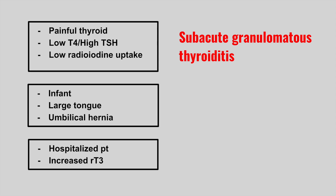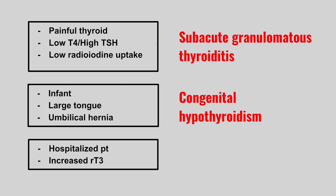The next patient is an infant that has a large tongue and an umbilical hernia. This is congenital hypothyroidism, also called cretinism.